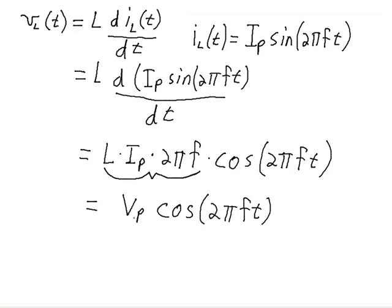From these two equations, there are two pieces of information that we can derive. The first one is the relationship between the peak voltage and the peak current. The second relationship is the relationship between the phase of the voltage and the phase of the current. So the peak voltage is equal to IP times 2πFL, after rearranging terms in the equation.